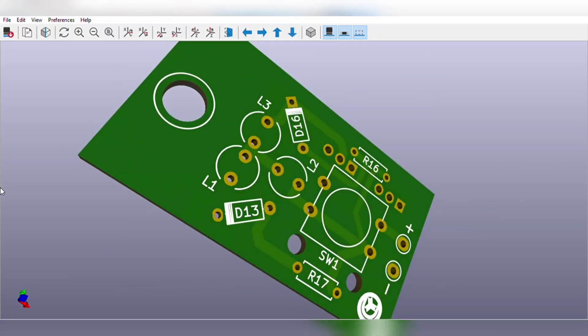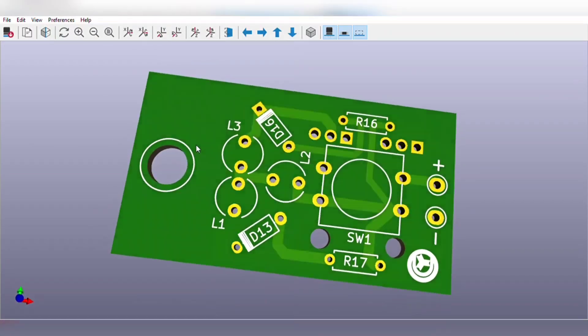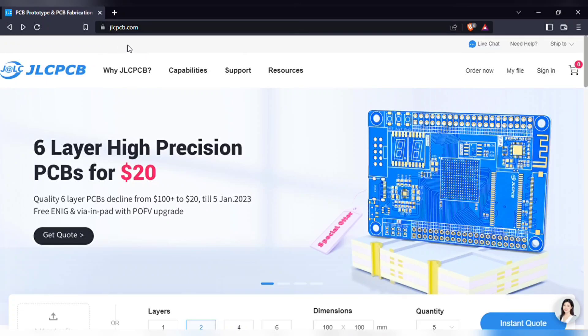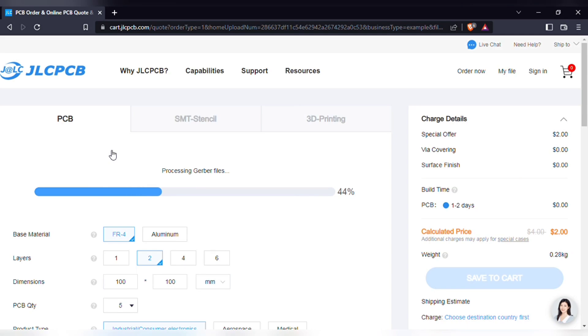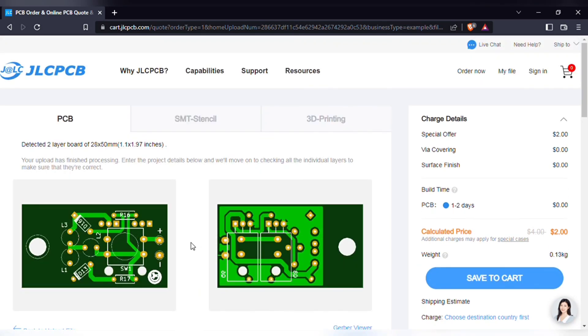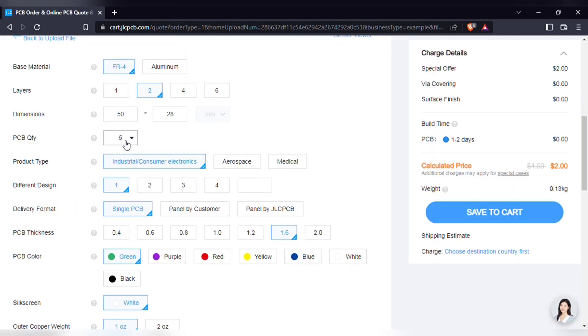In order to manufacture this PCB, visit jlcpcb.com and here you can add the Gerber file I provided. Here you can see the preview of the PCB. You can also change quantity and the color of PCBs as per your requirements and then save to cart for checkout.